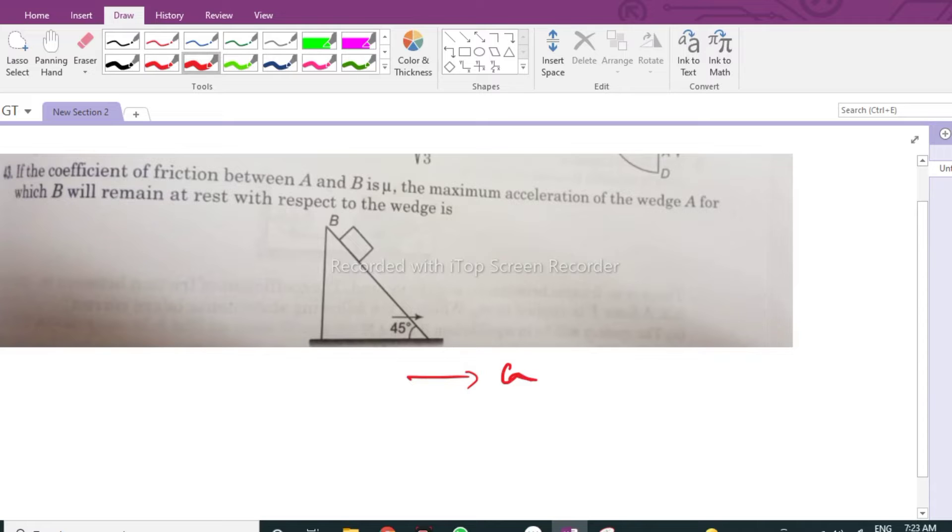The wedge has mass M, and we have to find what is the maximum acceleration that is possible for the wedge. For this type of problem, we have to first find the free body diagram.